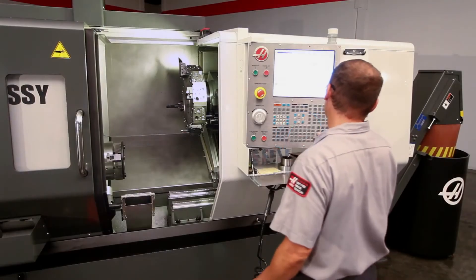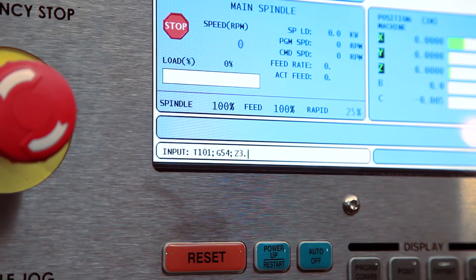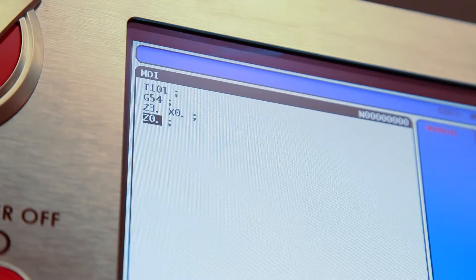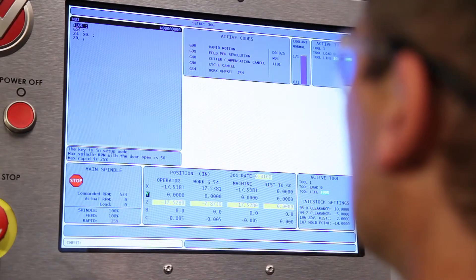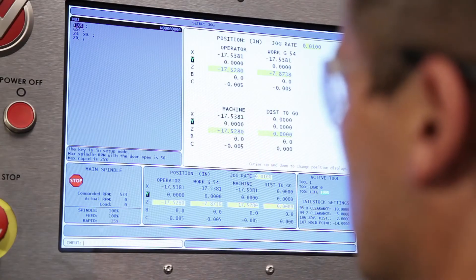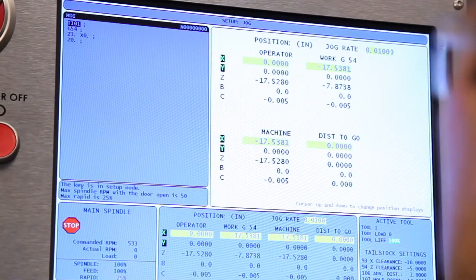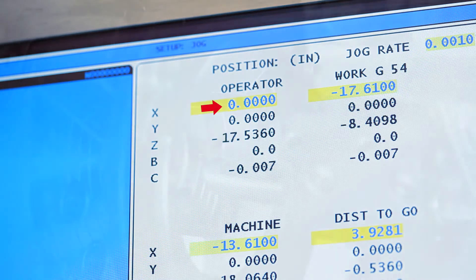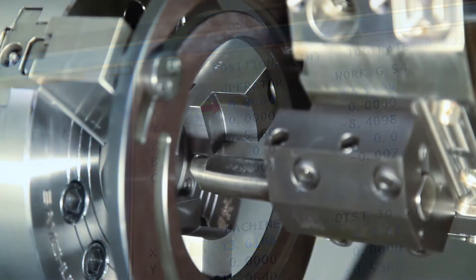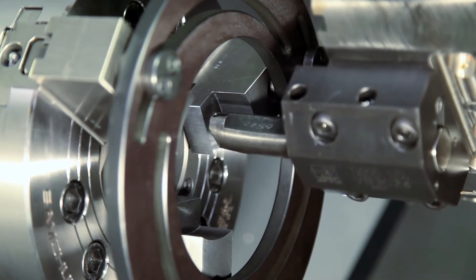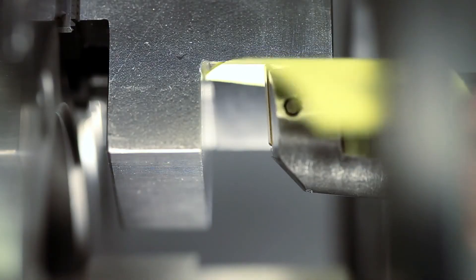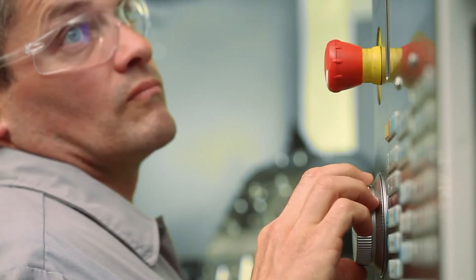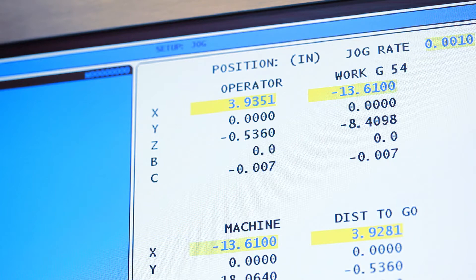We want to check what diameter the jaws are actually positioned at. To do this, we program a simple move going to X0 with the tool and offset we'll be using to re-cut the jaws. Press Hand Jog, press Current Commands, and press Page Up until you reach the Position page. With X axis selected, press Origin to zero out the operator position field. Now that we know where X0 is for Tool 1 and offset G54, let's find the jaw face diameter. Jog to a point very close to the face of the jaws. Use a slip of paper and bring the tool to the jaw face until the paper is pinched by the insert tip.